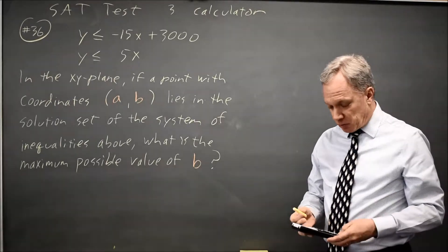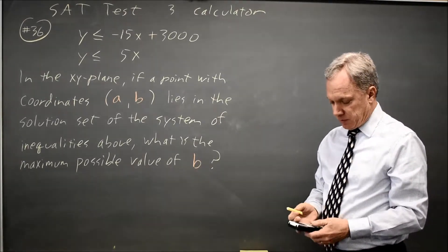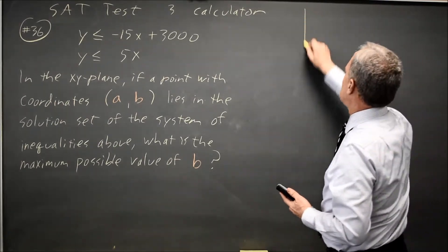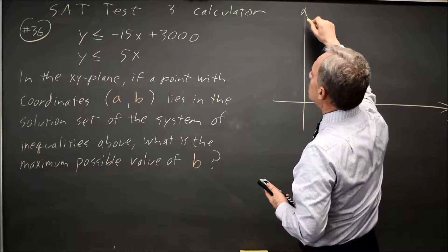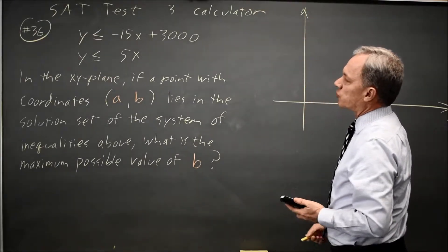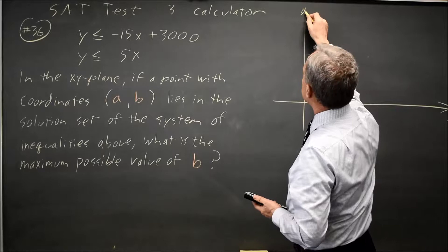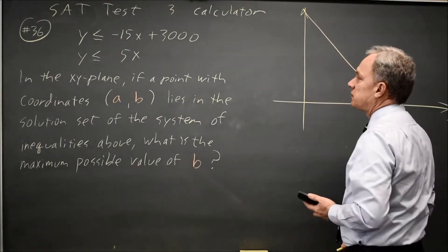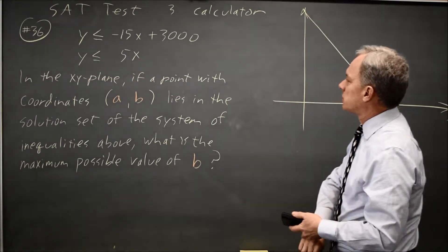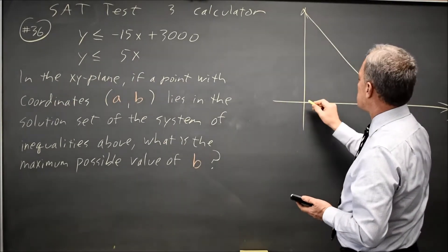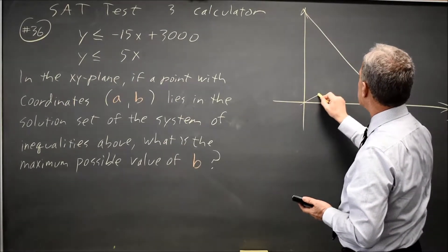Since this is a calculator question, I'm going to graph it on my calculator. Here, x, y, I'm going to choose a y maximum of 3,000 because that's the y-intercept there. And it has a slope of negative 15, which is kind of steep. And then this one has a y-intercept of 0, a slope of positive 5, which is shallower than the negative 15.